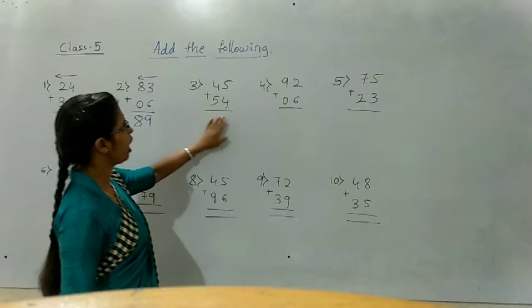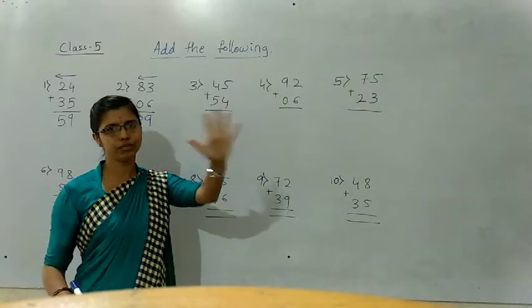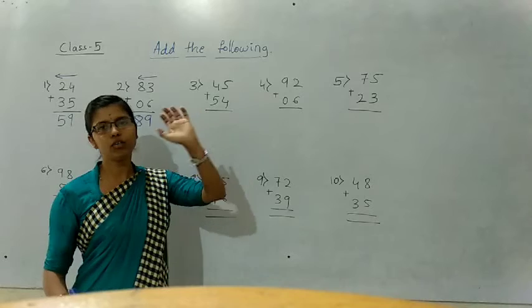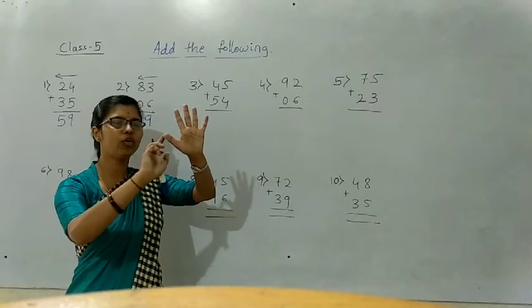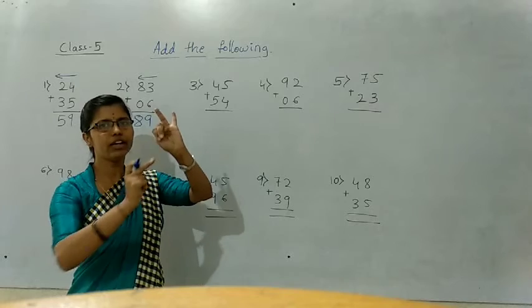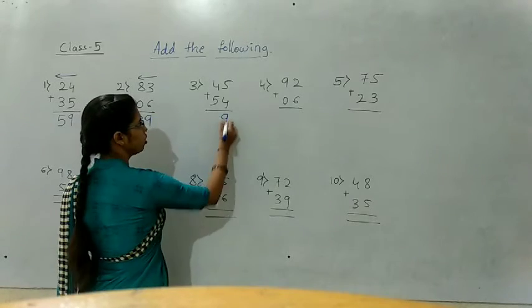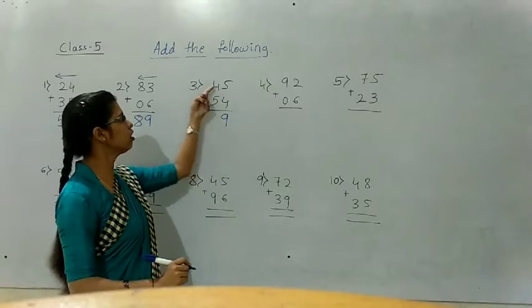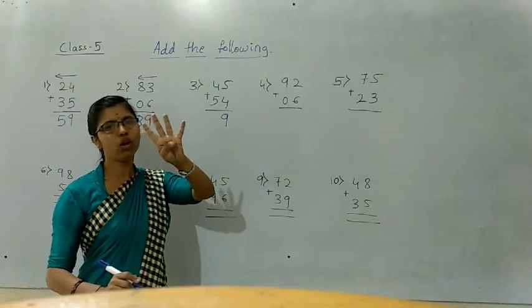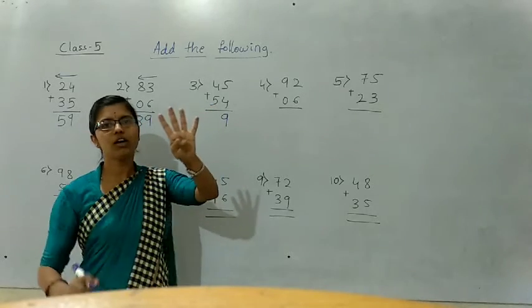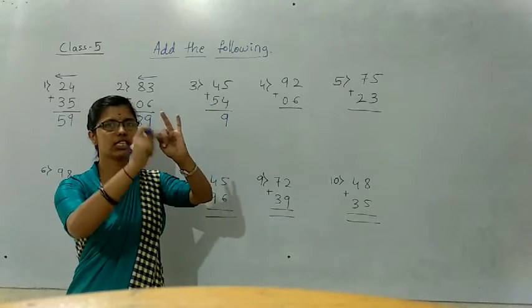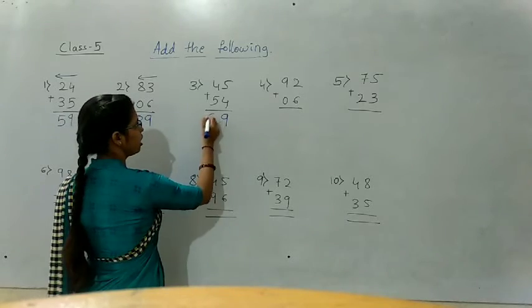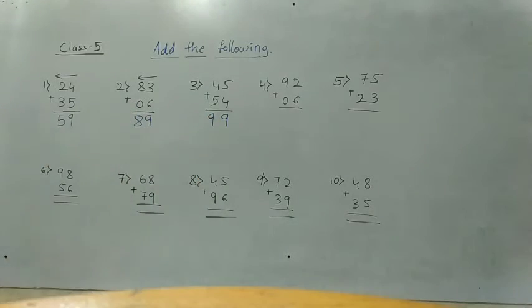Now add the next one. The upper number is 5, the below number is 4. Count after 4: five, six, seven, eight, nine. How much? 9. Next, the above number is 4, we hold 4 fingers, below number is 5. After 5: six, seven, eight, nine. That is 99. The answer for 55 plus 54 is 99.